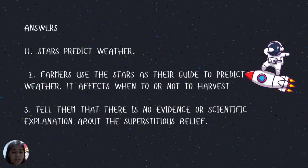For the question answers: stars are used by farmers as a guide to predict weather and to decide when to harvest. Tell them that there is no scientific evidence or explanation for superstitious beliefs.